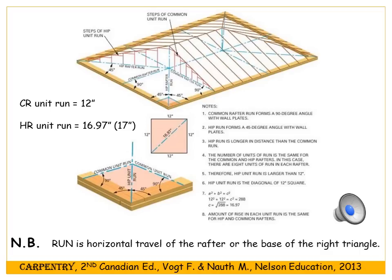The unit run of the hip rafter is 17 inches, in the same way that the unit run of the common rafter is 12 inches. Both will have the same unit rise, denoted by the slope. If the slope is 9-12, the unit triangle for the common rafter is 9-12 with a hypotenuse of 15. For the hip rafter the triangle is 9-17 and the hypotenuse is 19.21.